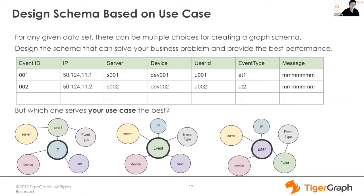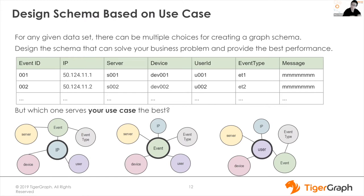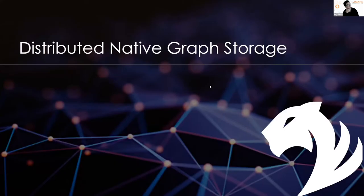Schema design is really based on two things: first, the data columns you have, and second, the use case you want to support. You cannot define an edge across tables — that's the only hard limitation — but you need to think from the data perspective and your use case perspective. Some schema designs serve one use case, some serve another, so we need to take the use case into consideration.